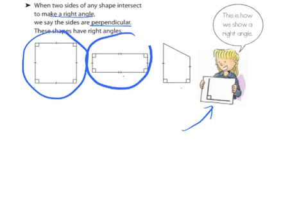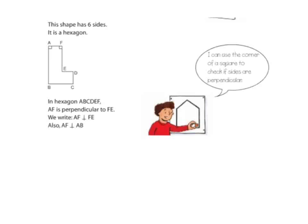The square and the rectangle both have four right angles. This trapezoid only has two. And this shape is a hexagon — because it has six sides, it's not our traditional hexagon, but it is still a hexagon. It's hexagon ABCDEF. We could say that AF is perpendicular to FE, and AF is perpendicular to AB. We can always use the corner of a square or the side of our page to check if sides are perpendicular — you would just line it up and see that it is in fact perpendicular.